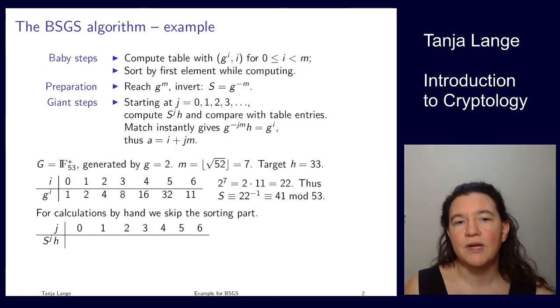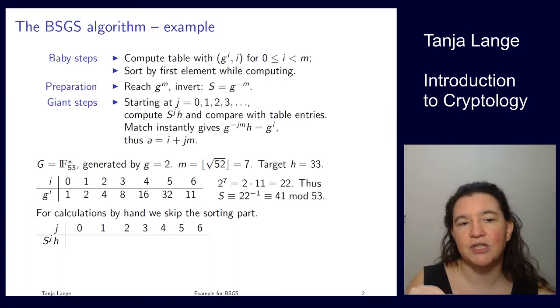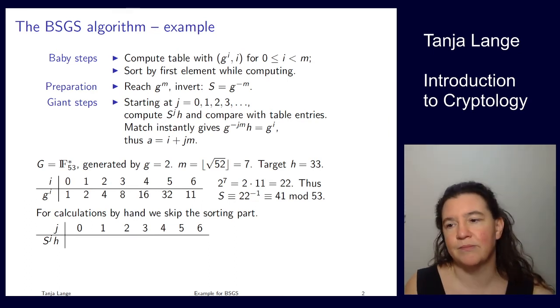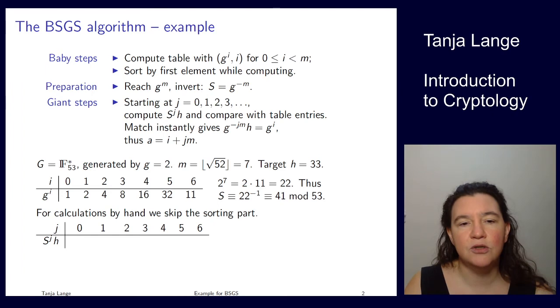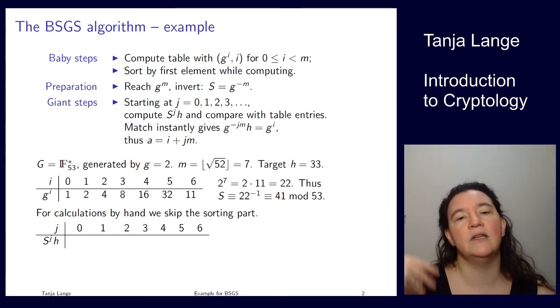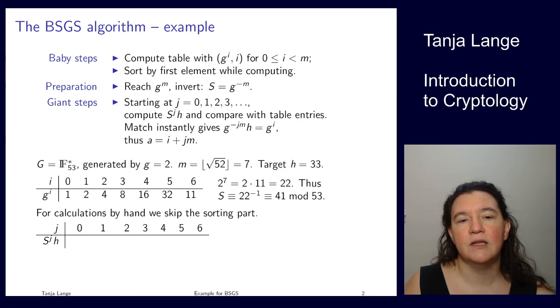In the second step, the giant steps, I wouldn't make a table—I don't need storage for that step—but it is easy for the presentation here. What you're doing is filling in numbers, computing different values for j, until you find a match between the two tables.